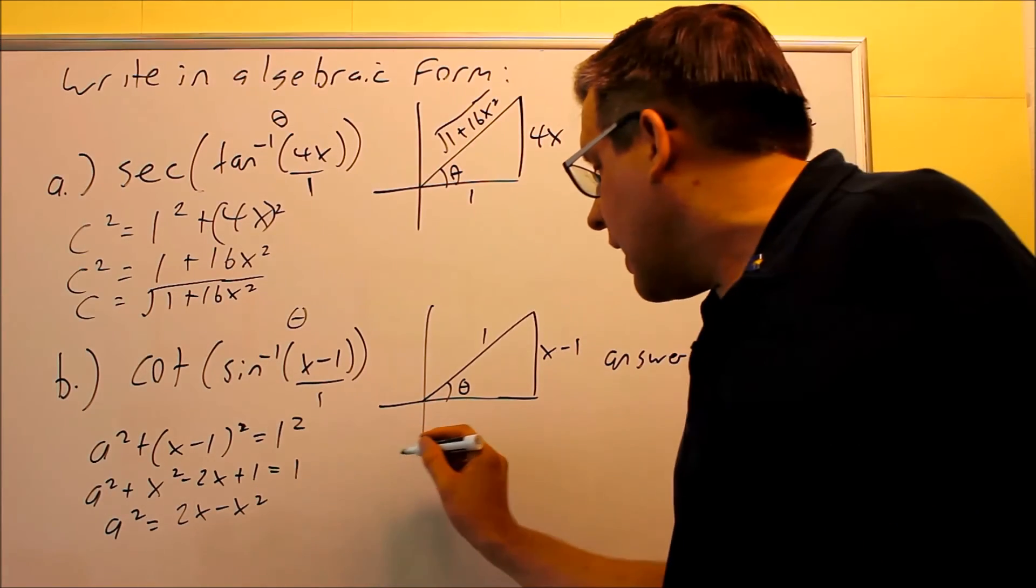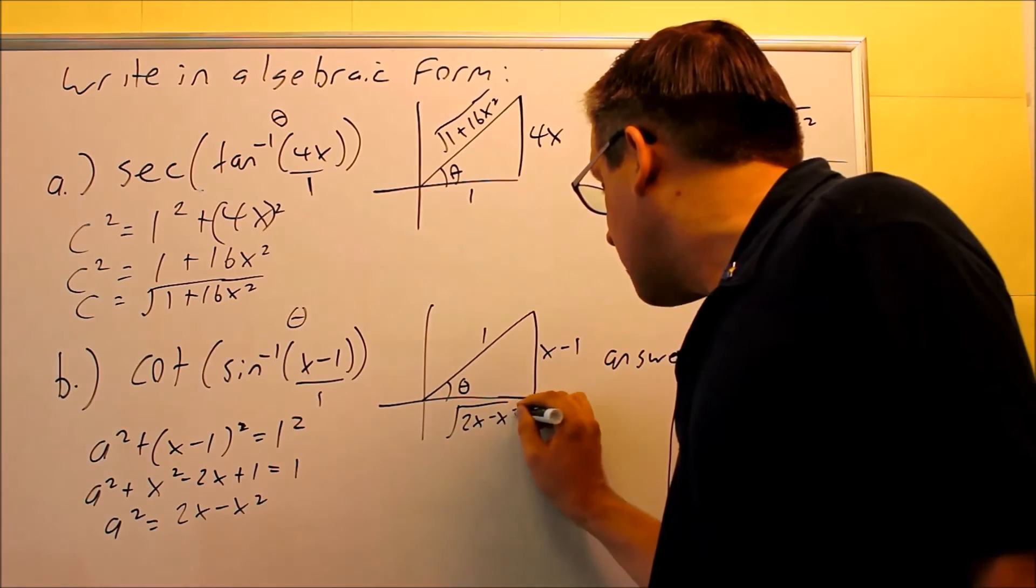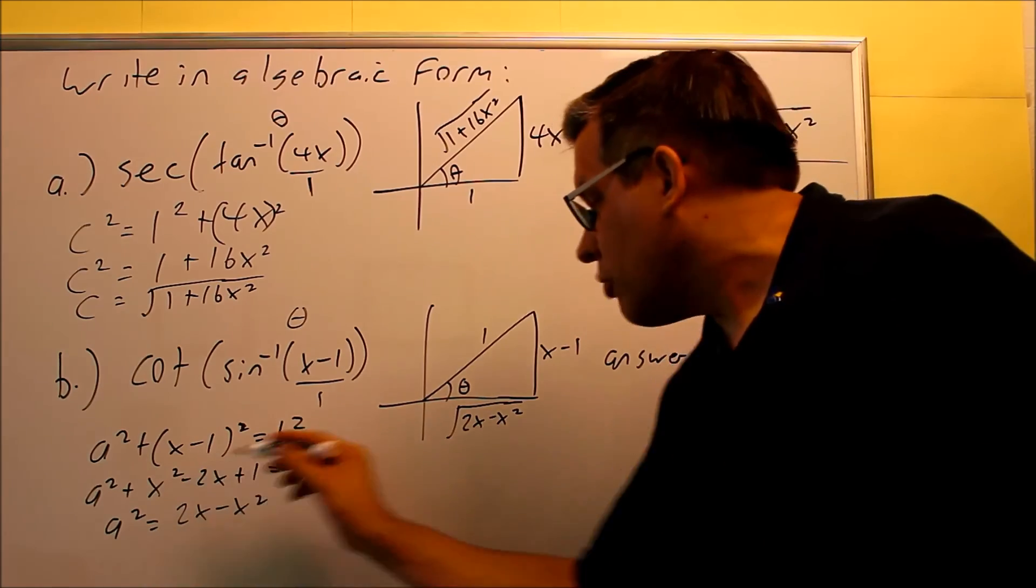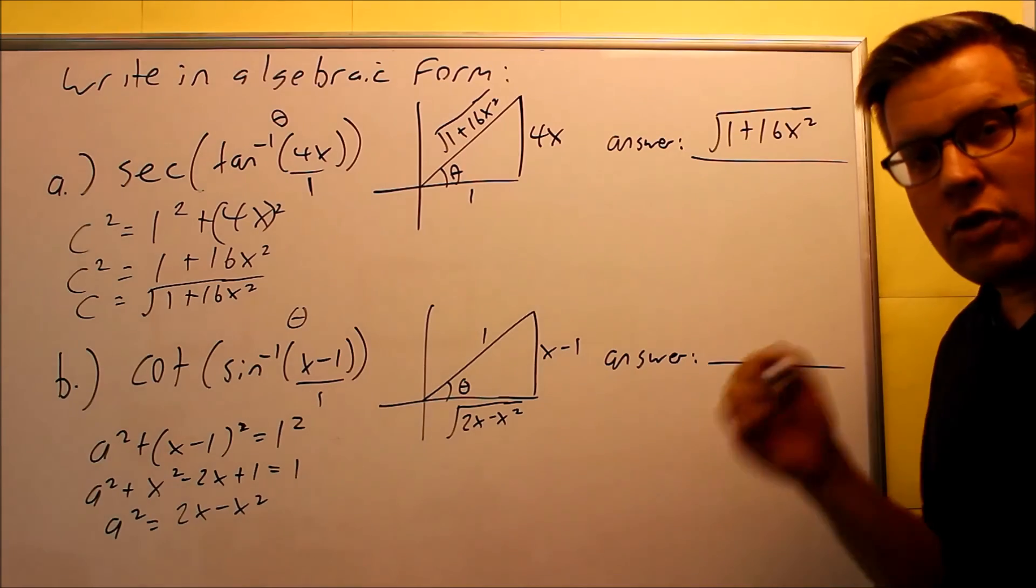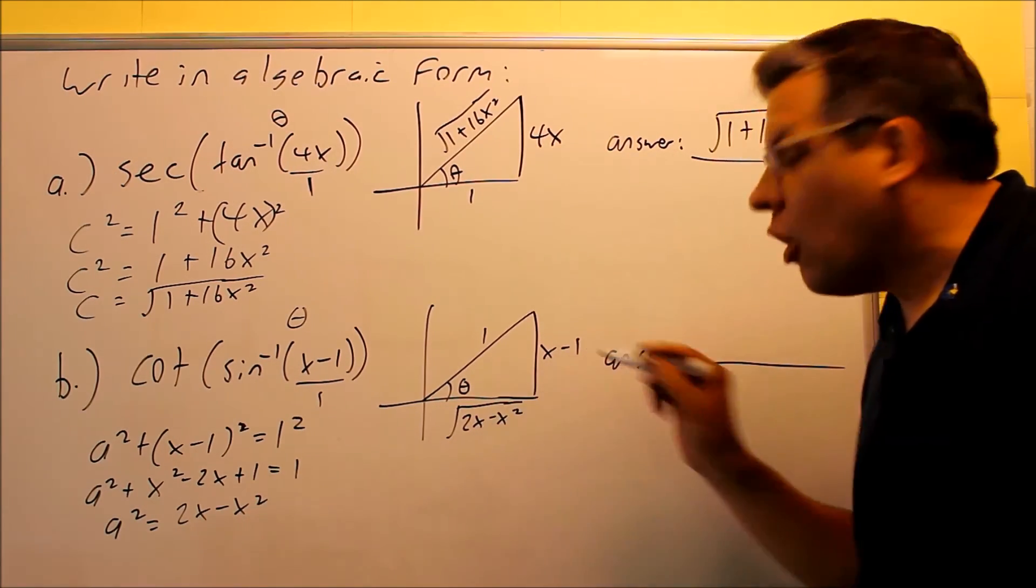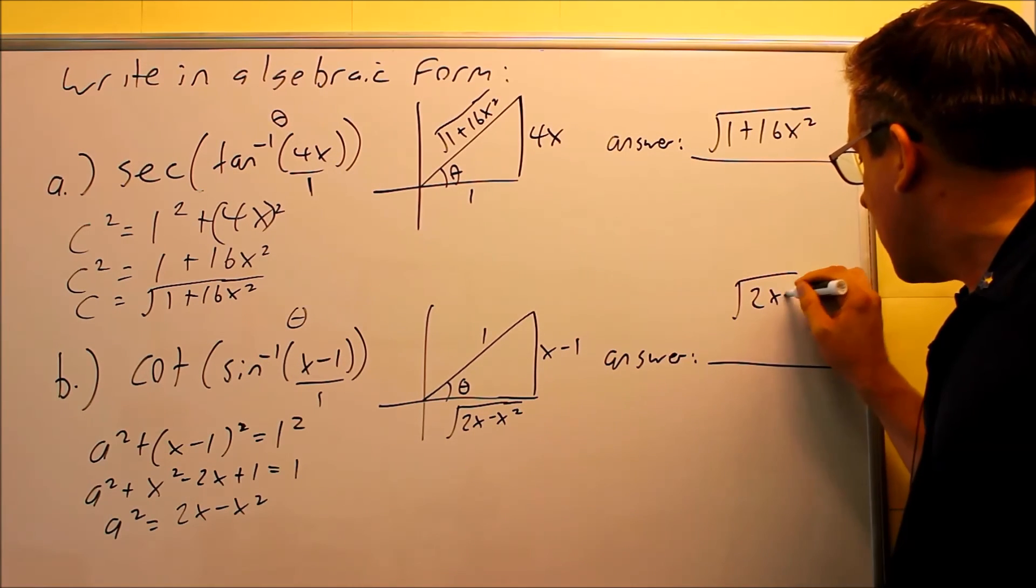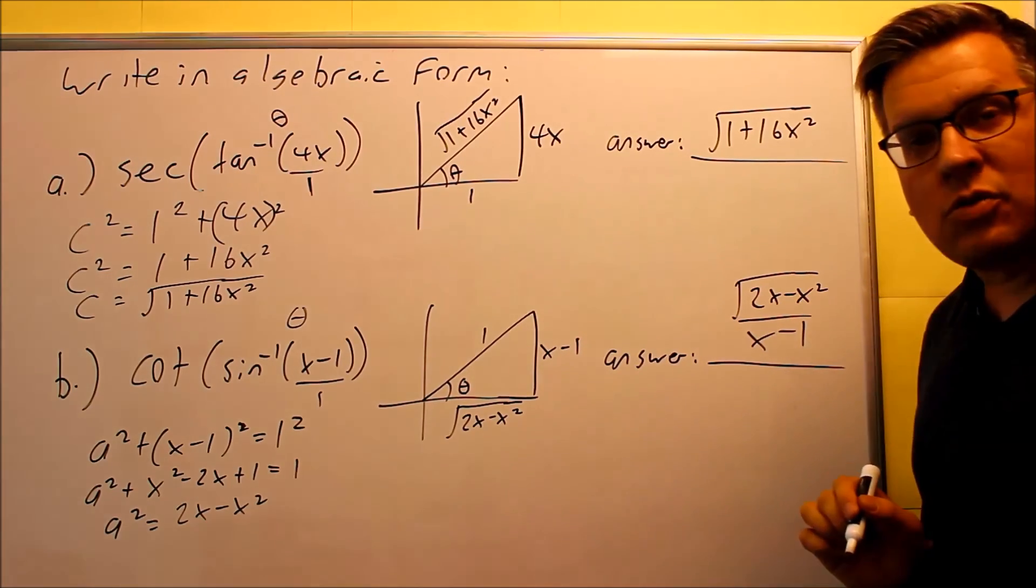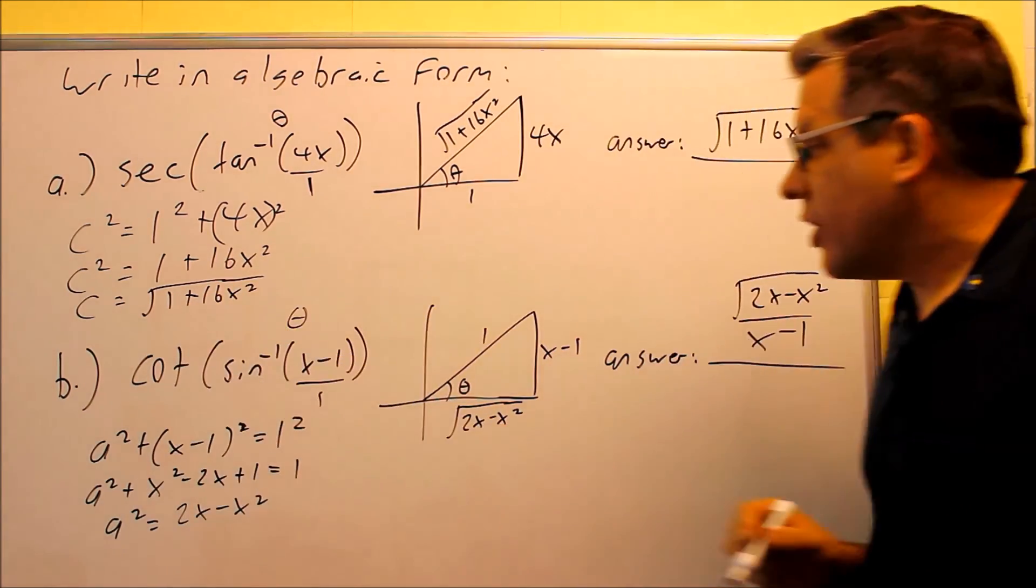And then my a squared will end up being the square root. So my answer is 2x minus x squared, that's going to go in right there. So again, square root both sides and you'll get this. Now for the answer, we need to use the definition for cotangent. Cotangent is the adjacent over opposite. So my answer is written as square root of 2x minus x squared all over x minus 1. And this would be the equivalent algebraic expression for all this right here.